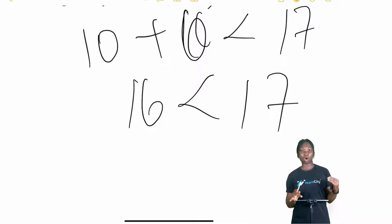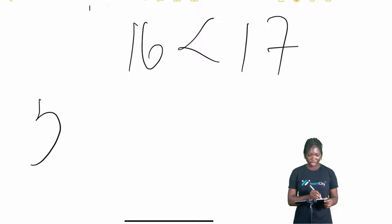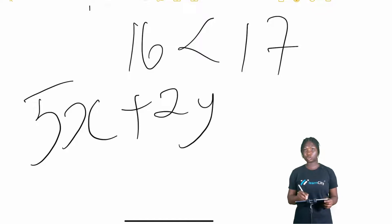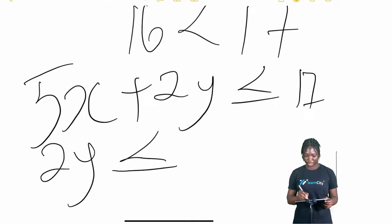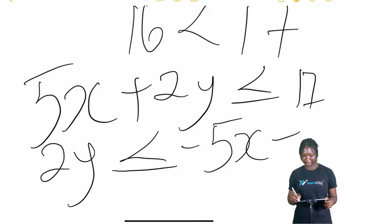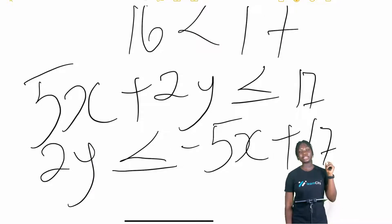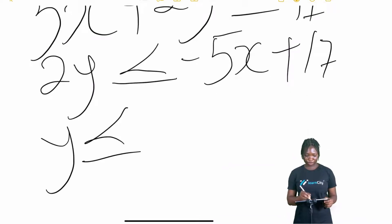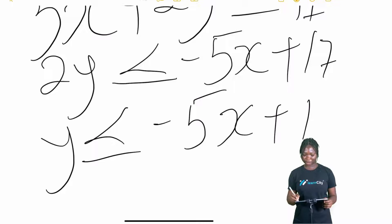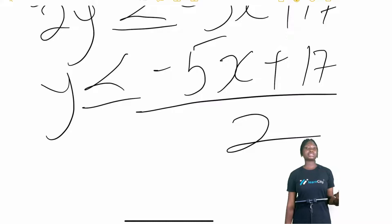To illustrate how to determine this region, we need to first express y in terms of x. From 5x plus 2y less than or equal to 17, we get 2y equals 17 minus 5x, so y equals (17 minus 5x) over 2. Now we need to find the intercepts — when x is 0, what is y?